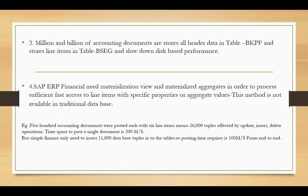In traditional systems, millions and billions of accounting documents store all header data in one table and line items in a separate table, slowing down disk performance. SAP ERP financial systems need materialization views and materialization aggregates to process sufficient fast access to line items with specified properties or aggregate values - functionality that is not available in the traditional system.